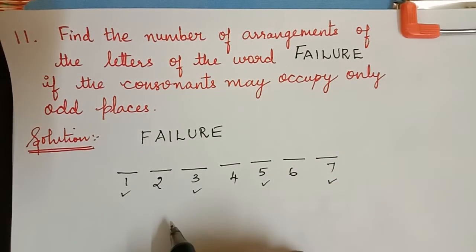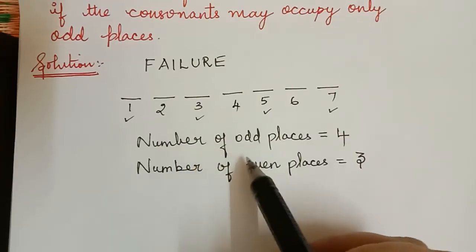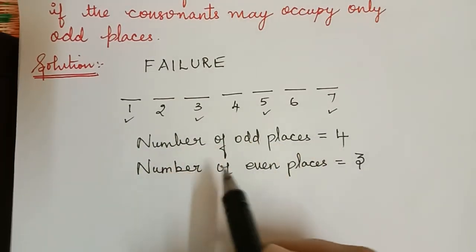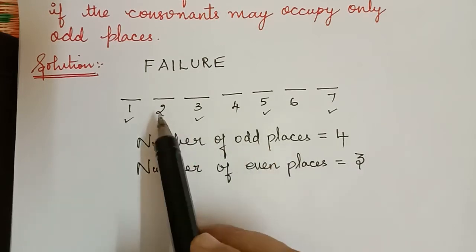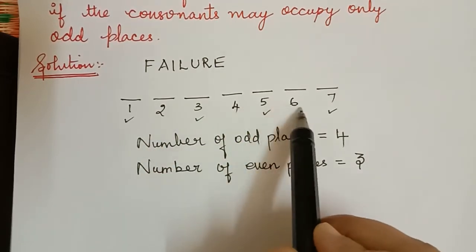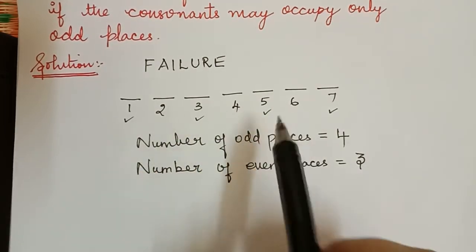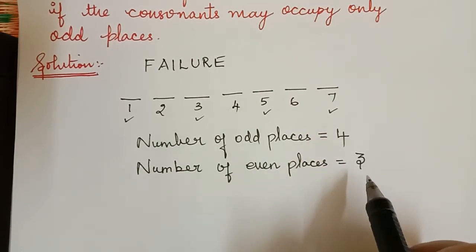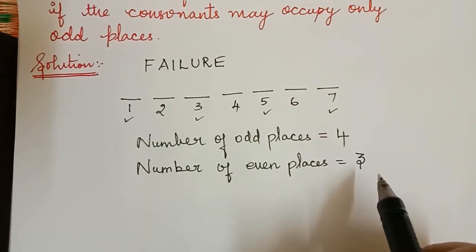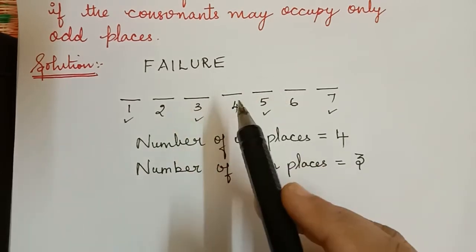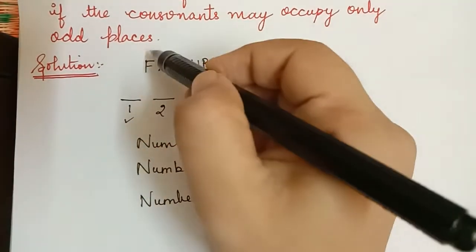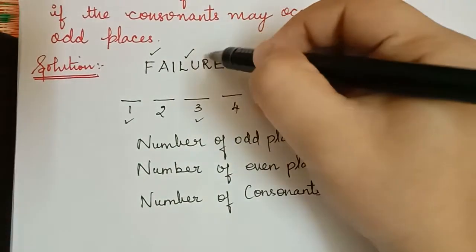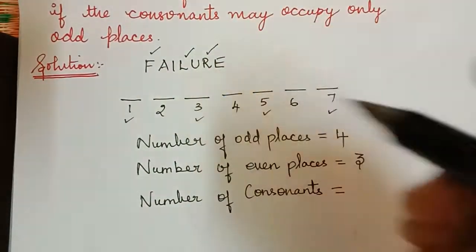Now let us count the number of consonants available in this word. The number of odd places is equal to 4 and the number of even places — that is positions 2, 4, 6 — is equal to 3. The consonants in the word FAILURE are F, L, and R, so there are 3 consonants.